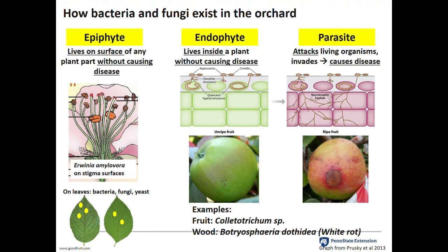Fungicides are most effective when the spore is germinating and there's an active infection going on. In the dormant phase, fungicides don't touch it — it's completely protected. At some point there's a cue: either tree stress or a certain developmental time point in fruit development, and you get bitter rot or white rot with Botryosphaeria. At that point it turns parasitic, attacks the living organism, and causes disease.